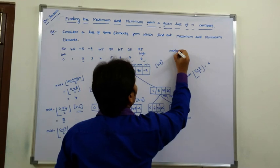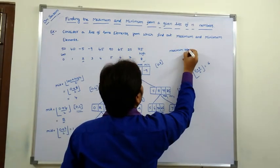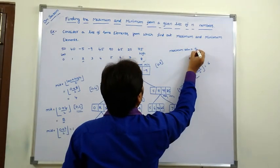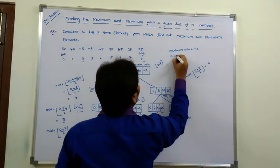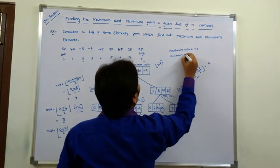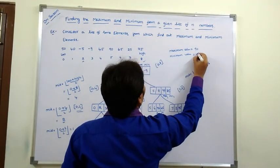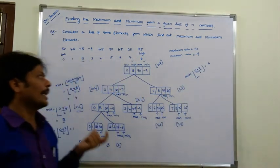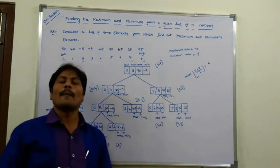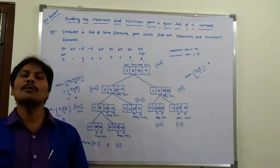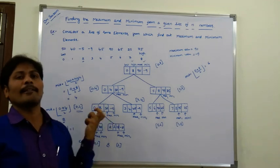So the minimum value is -9. In this way, we find the maximum and minimum values using the Divide and Conquer method.